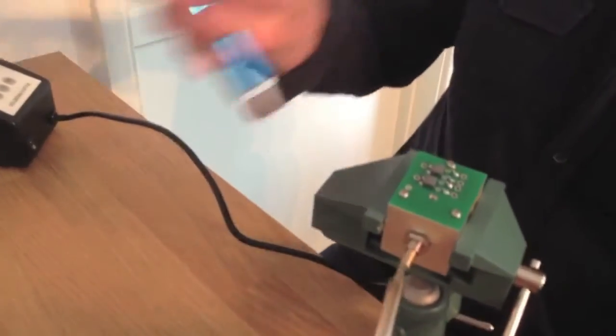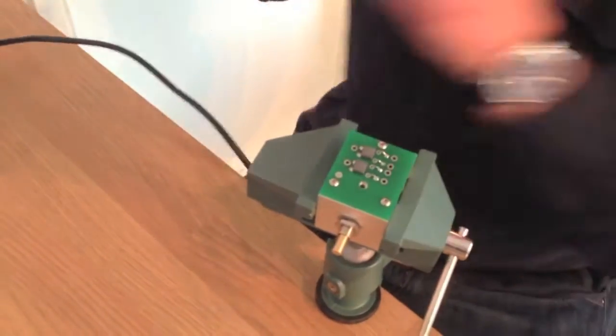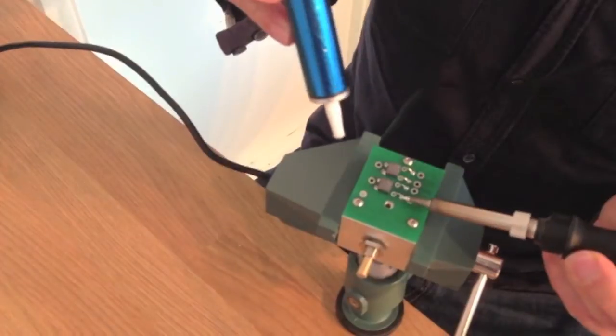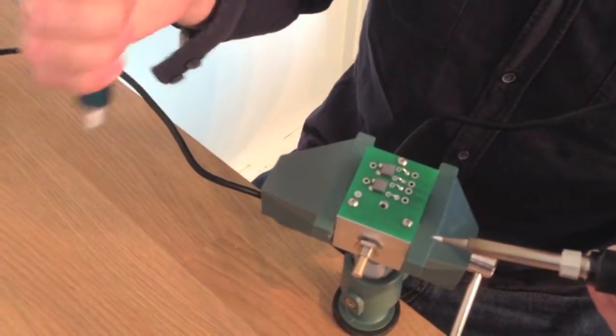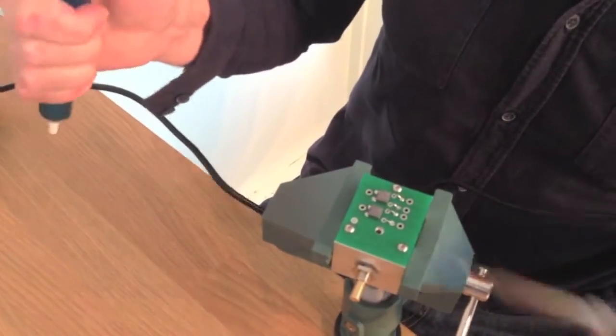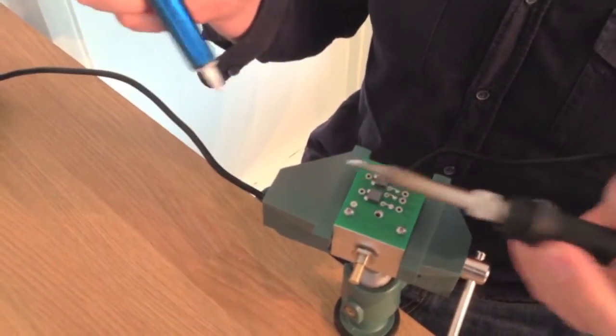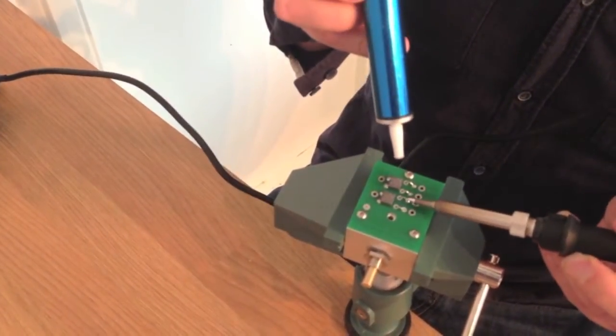Press down on the solder sucker a few times to get rid of any gunk that's in it. And then clean the nib. Heat this up.